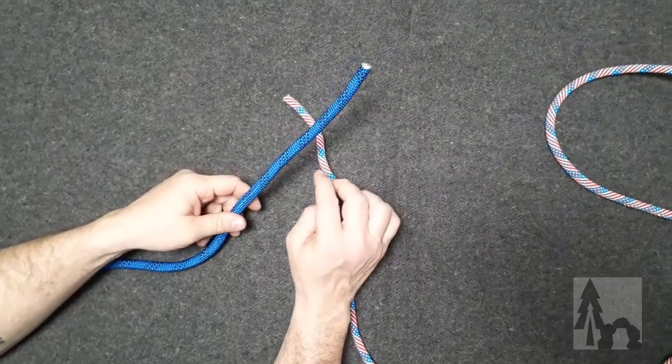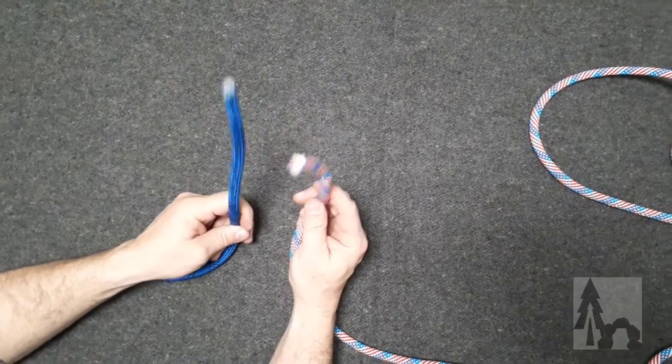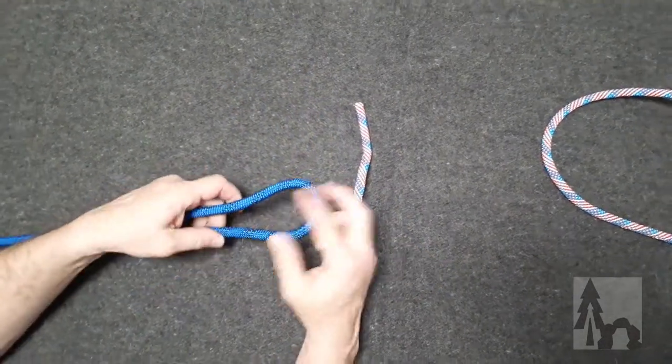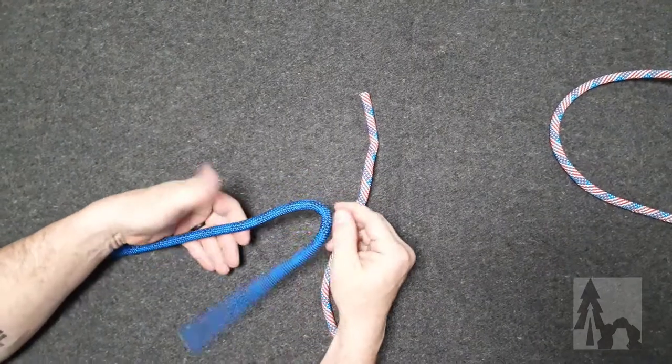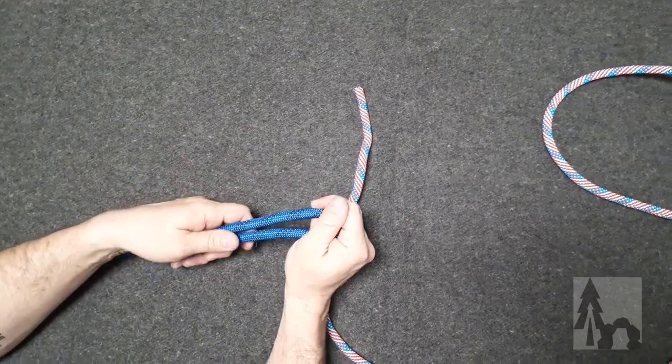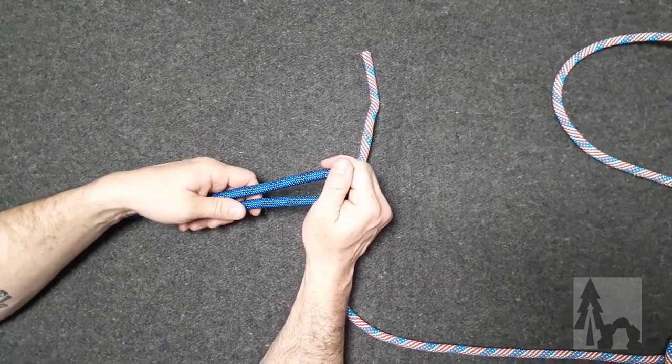All right, so let's talk about bends or tying two lines together. I have a red, white, and blue and a blue. I want to join these together. The one you use most commonly is called the sheet bend. A sheet is a sail on a sailing ship, and this was usually the way they would attach cloth.